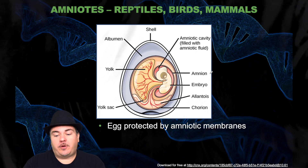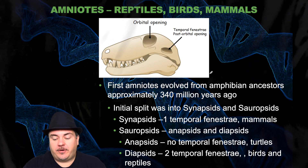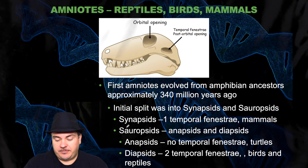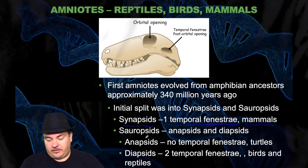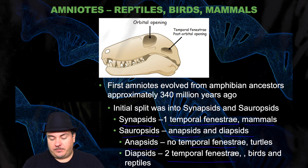Next we have the amniotes, which are the reptiles, birds, and mammals. They're called amniotes because they have an egg protected by amniotic membranes. The first amniotes evolved from amphibian ancestors approximately 340 million years ago. The initial split was into synapsids and sauropsids. Synapsids have one temporal fenestra, and that's the mammals. Whereas the sauropsids — made up of two types, anapsids and diapsids — the anapsids have no temporal fenestra, that'd be the turtles, and the diapsids have two temporal fenestrae, that's the birds and reptiles.